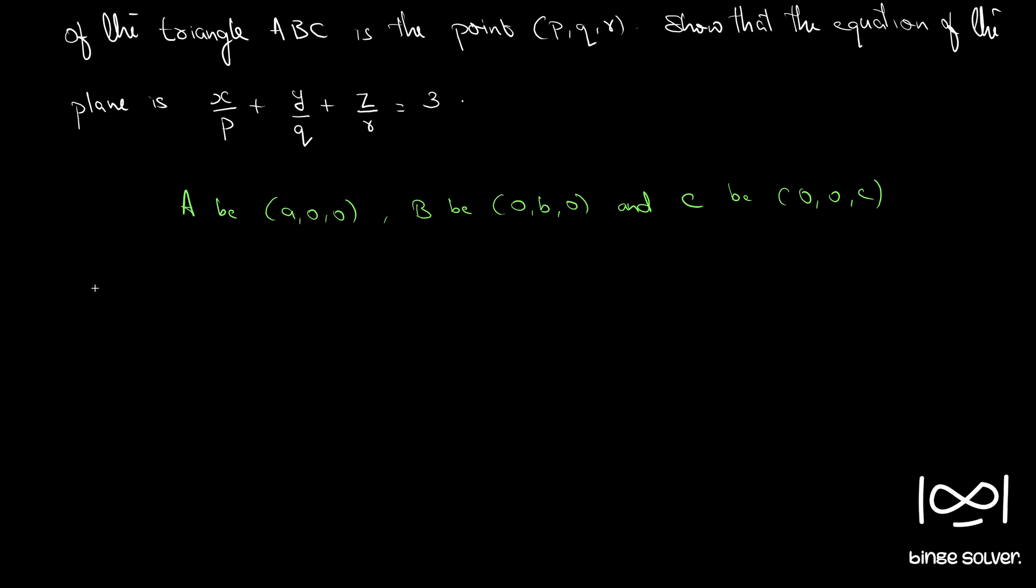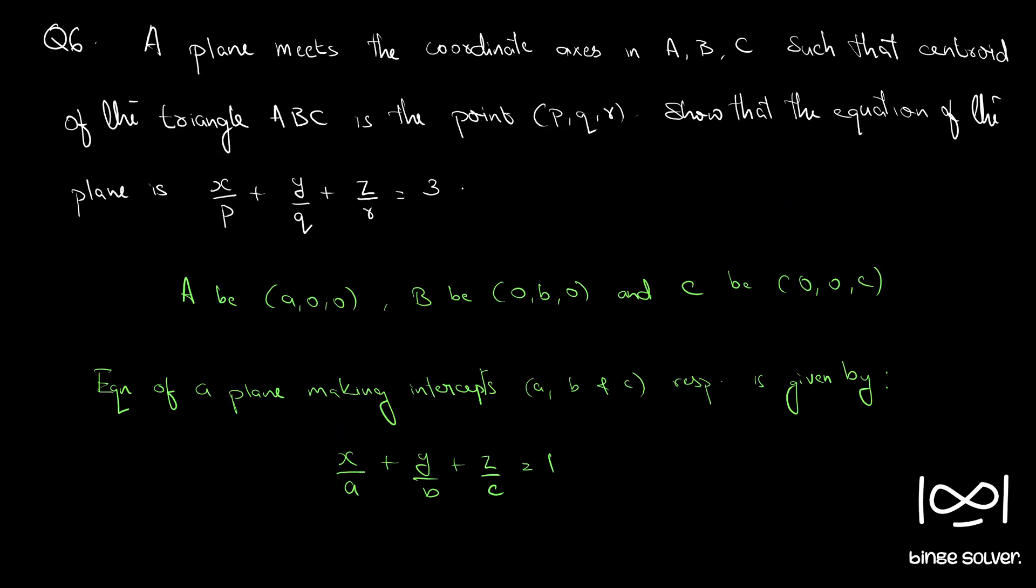So, the equation of a plane making intercepts a, b, and c respectively is given by - we have discussed this already - it is given by x/a + y/b + z/c = 1. This is the equation of the plane making intercepts a, b, and c. So we have this. Now,